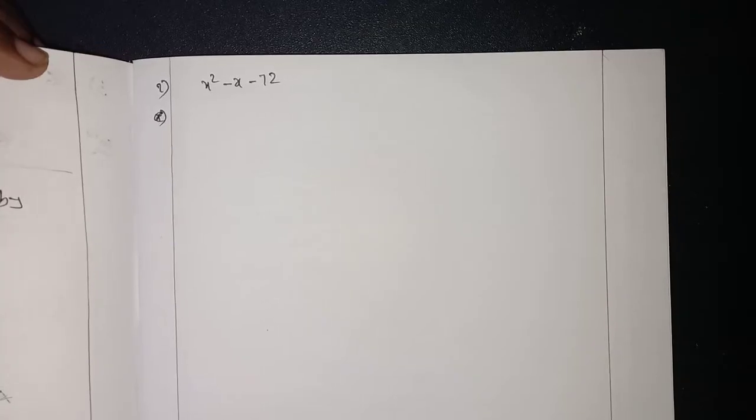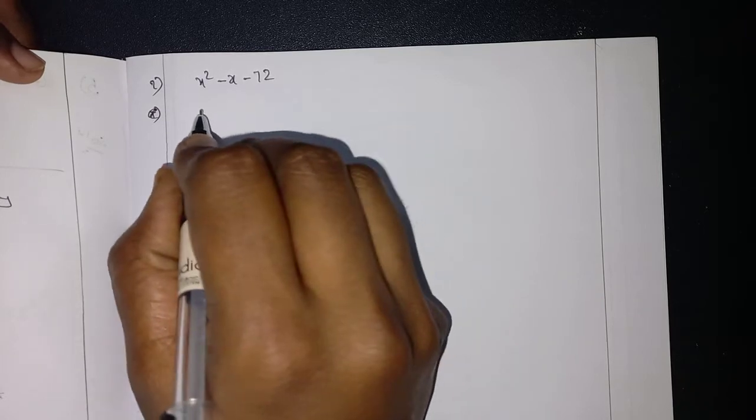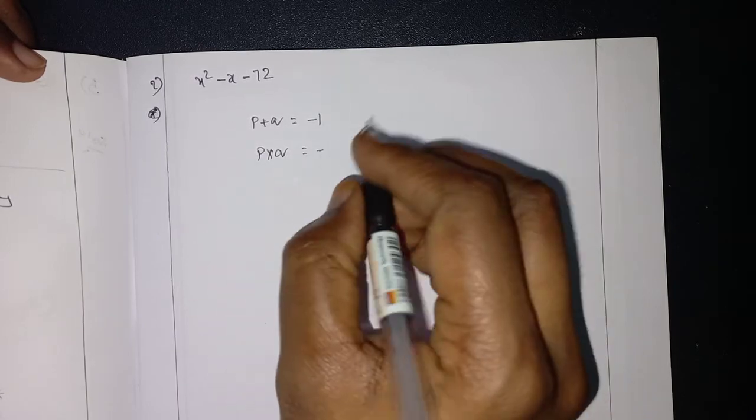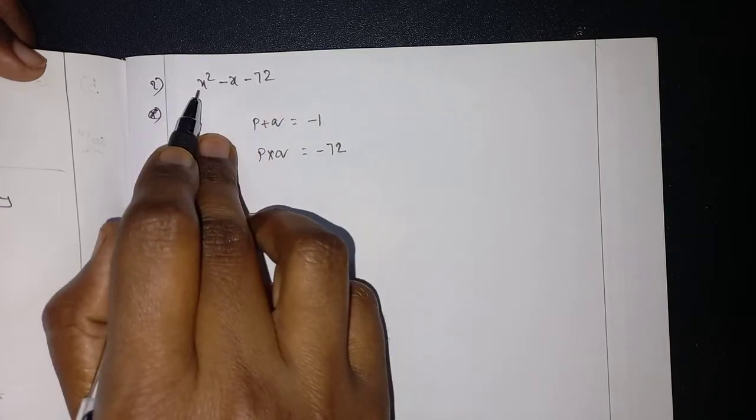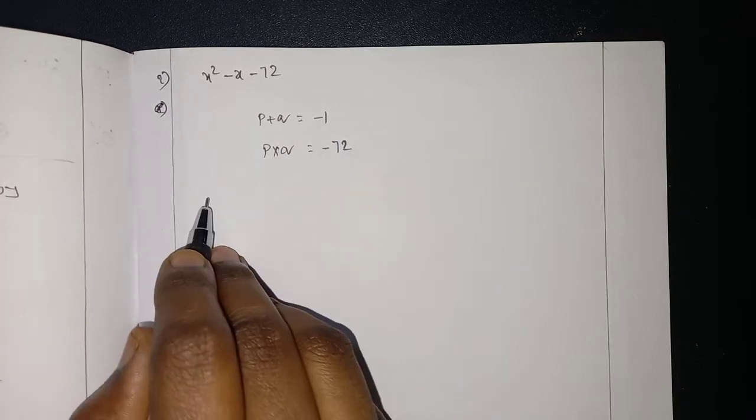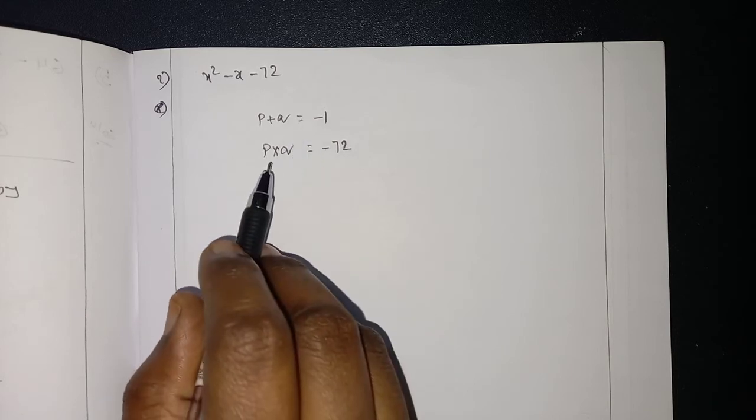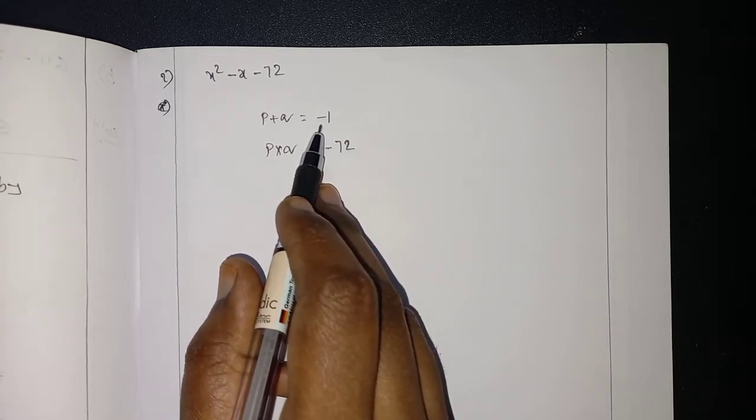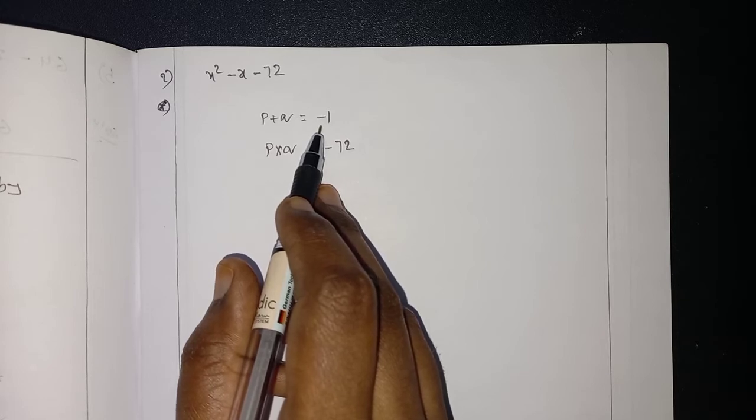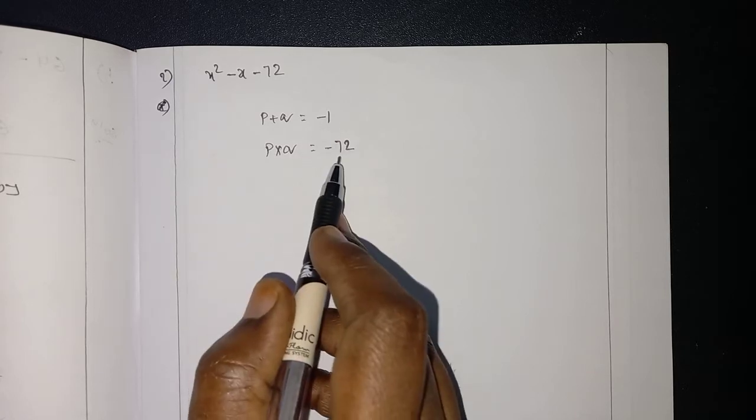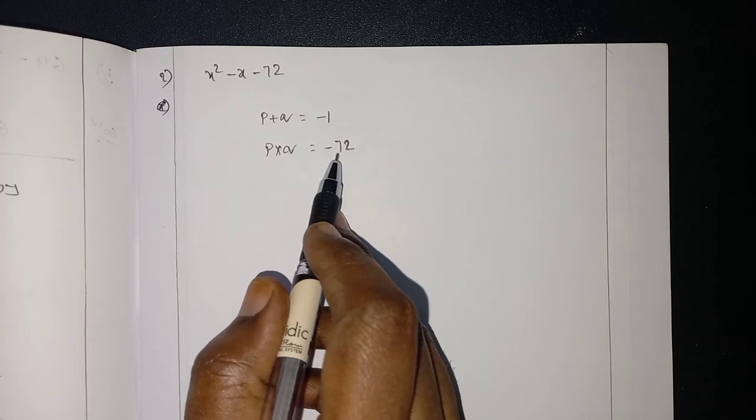Now, second one. This is the second problem. So here P plus Q will be minus 1. P into Q will be minus 72. Minus 72 into 1 is minus 72. What can be P plus Q? Which two numbers? Minus 1 means one big number and one less number. The bigger number will be having the negative sign, and those two numbers should be consecutive. Because when we will get minus 1, like minus 2 plus 1, minus 3 plus 2, those two should be the consecutive numbers.